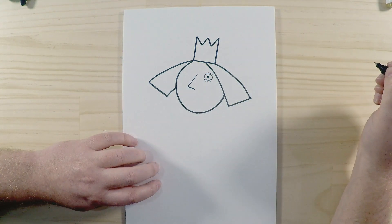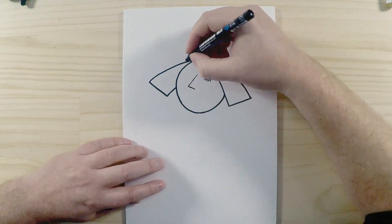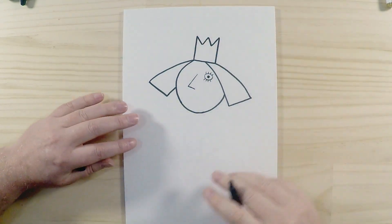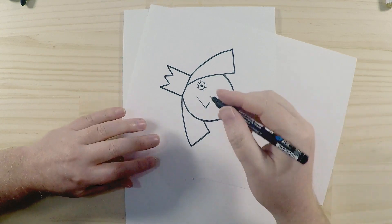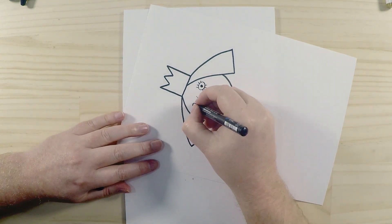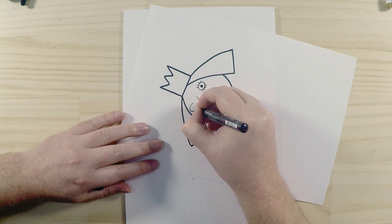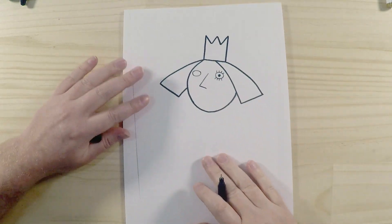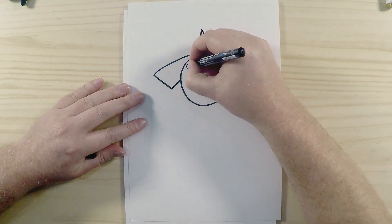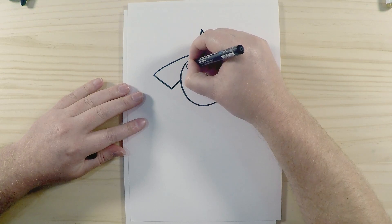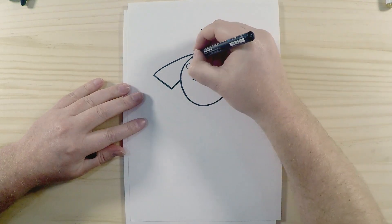And then we'll do the same on the other side there as well. I'm just going to turn my paper over a little bit, just makes it easier. Draw an oval like that, and again, circle for her pupils, and then the same. One, two, three, four.